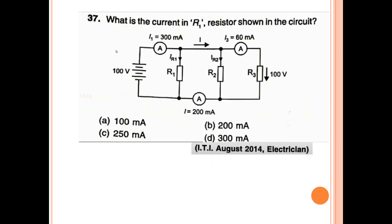37th question: What is the current in resistor R1 shown in this circuit? I R1 is connected, and the total current wave is 100 mA.